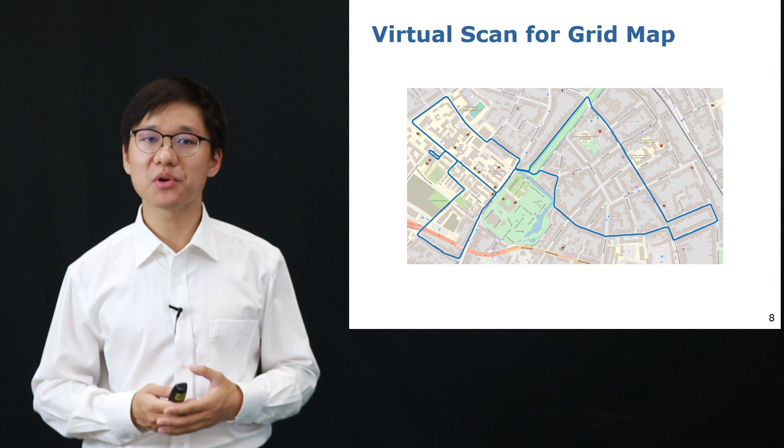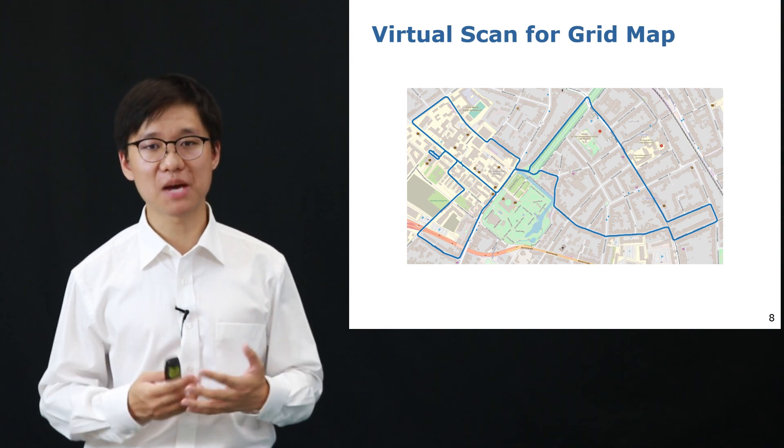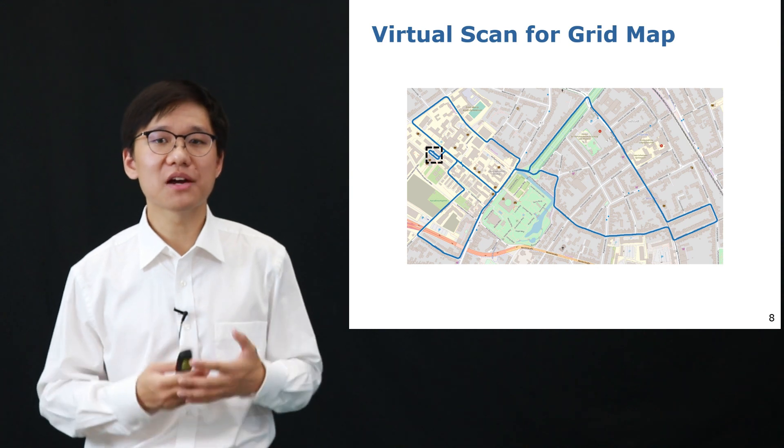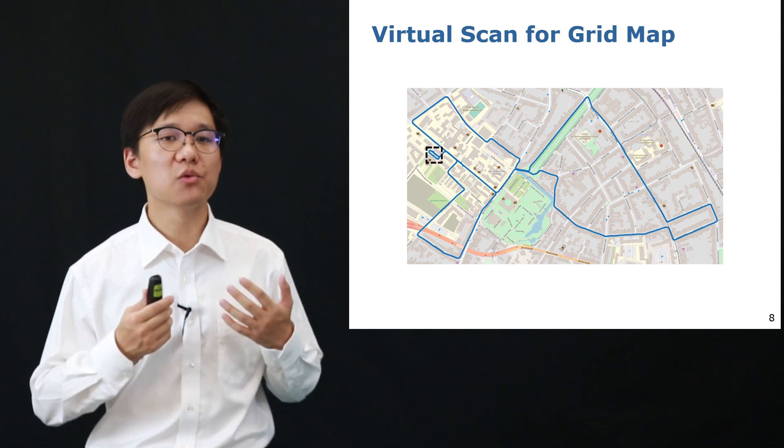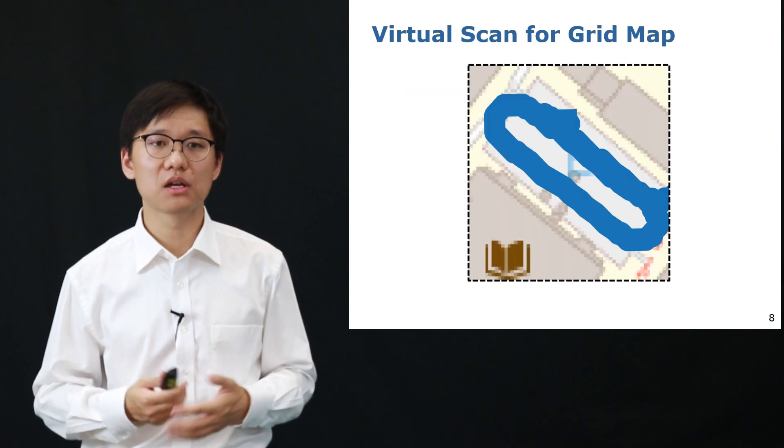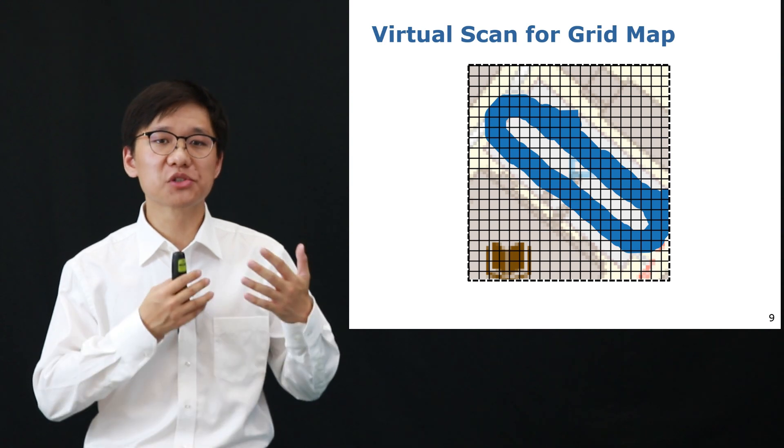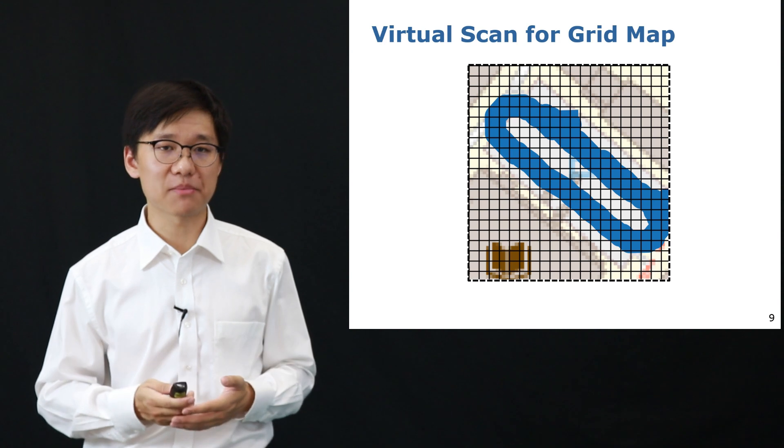Here I show an example of generating the map frames. This is a given global map of the environment and the blue line represents the locations where we've been before. Here we zoom in a part of area in the environment. And you see that we first put grids on it and for each grid we will generate a virtual scan and store it in the map.